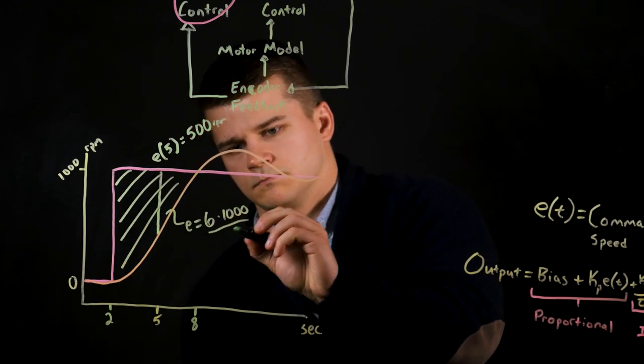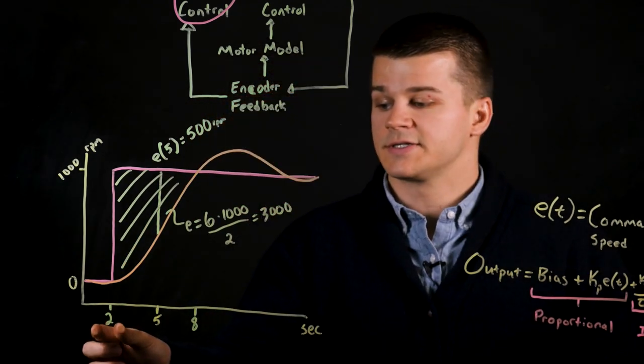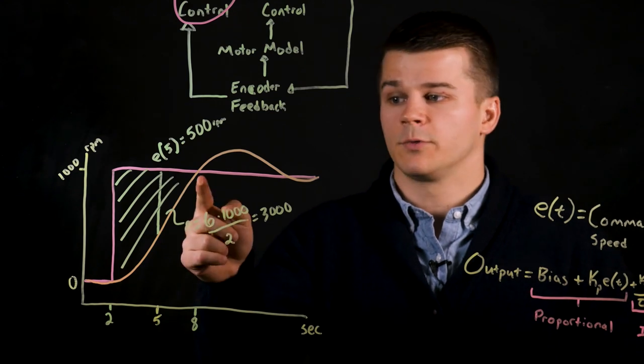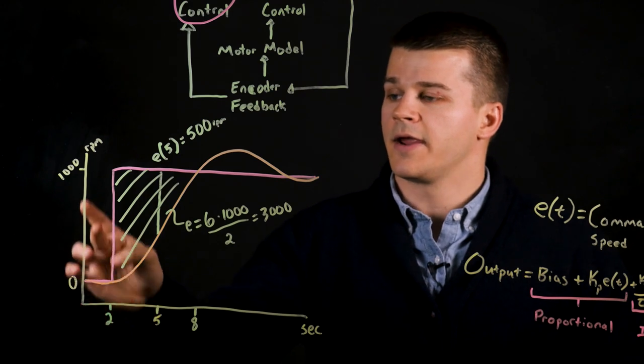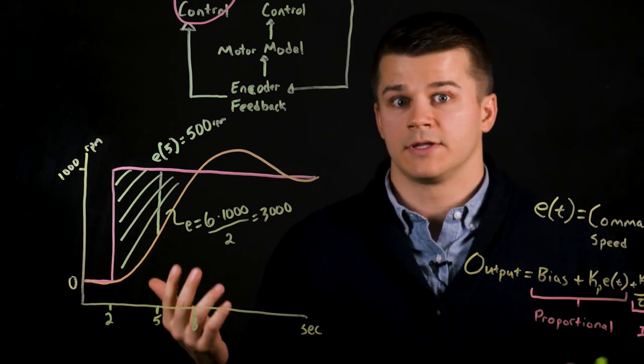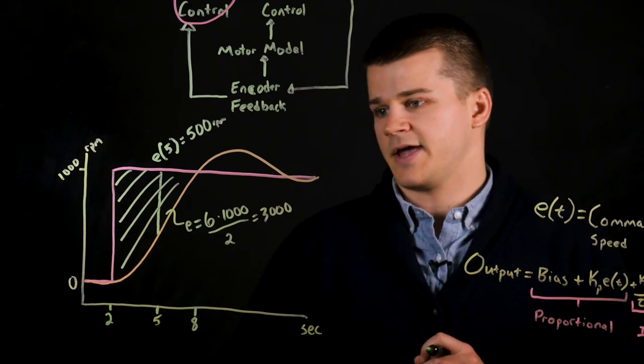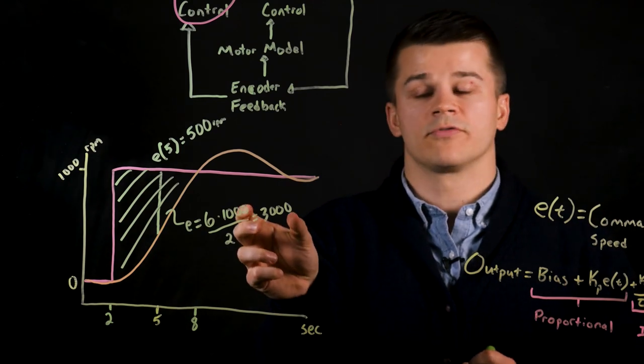Now for a rough estimate of this graph we can imagine this is time two and then at the very end when it crosses here is time eight. Thus we have a six second time here and then an error of a thousand. If we roughly guess that it's half of a square, we get an error of three thousand.